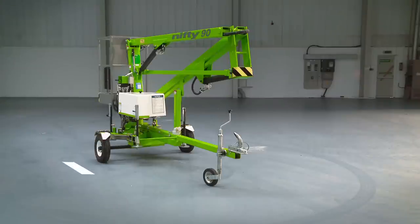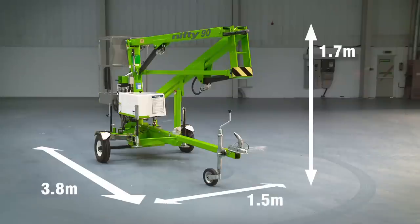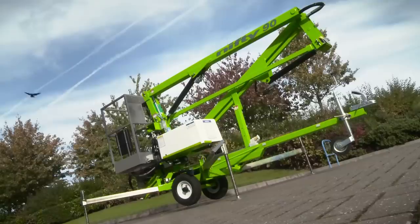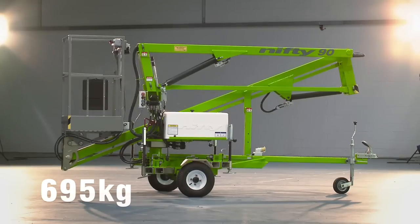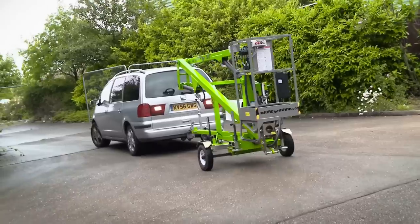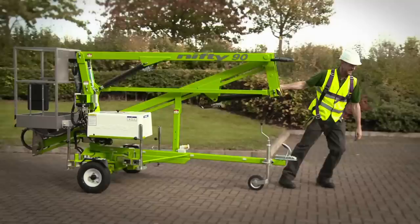The Nifty 90 is only 3.8 metres long, 1.7 metres tall with a towing width of 1.5 metres, making it compact, manoeuvrable and ideal for working in a wide range of environments. At just 695kg it can be easily towed by a small commercial vehicle or family saloon, and can be manoeuvred on site by hand.